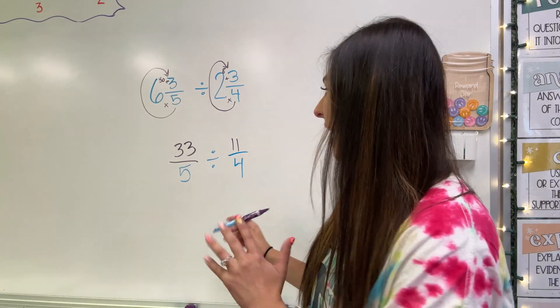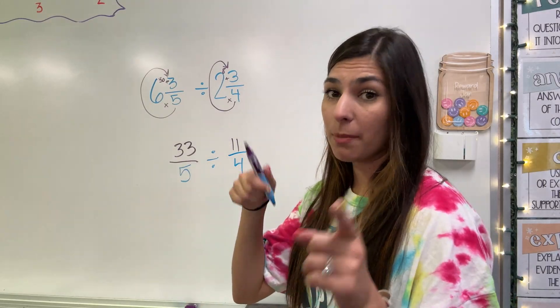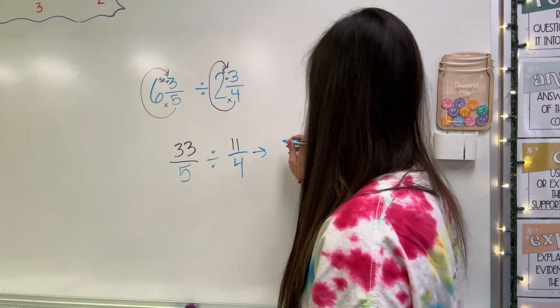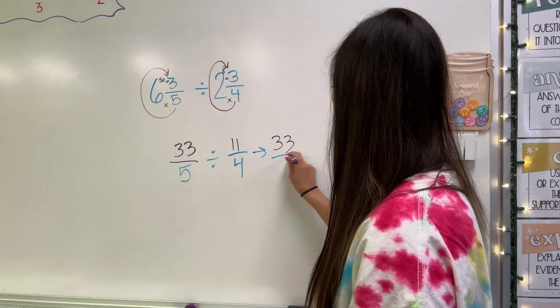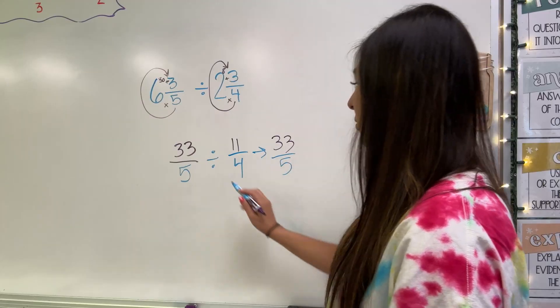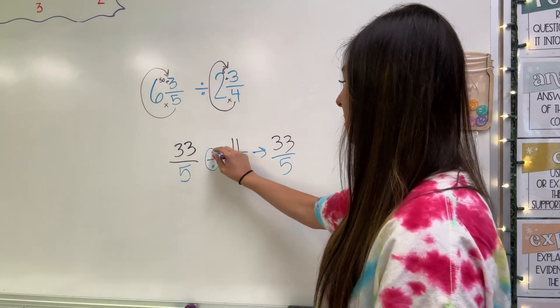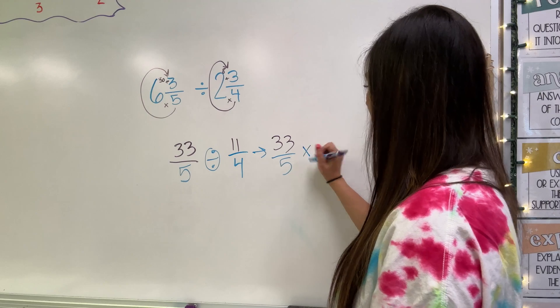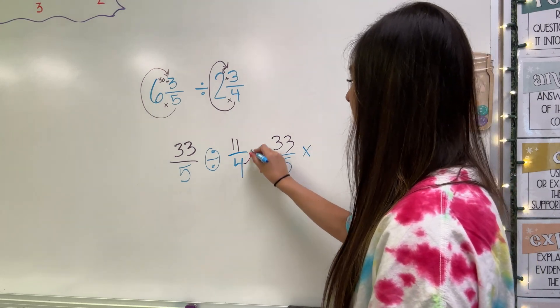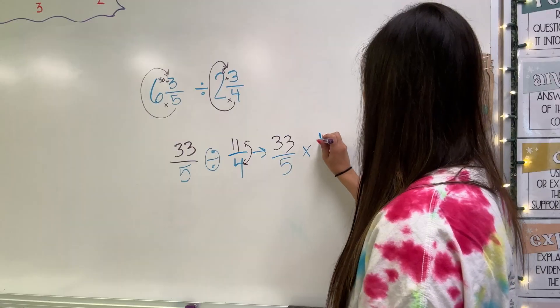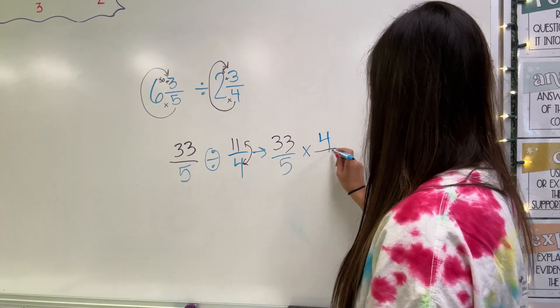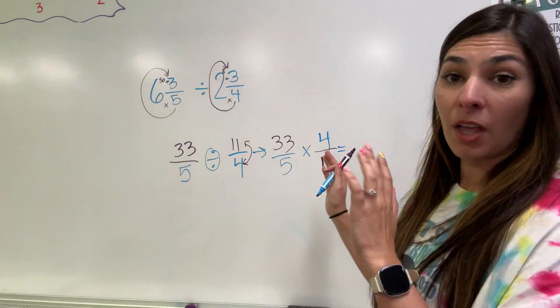From here, I can actually start to divide these problems, except I don't divide because I do keep change flip. I'm going to keep that 33 over five. I'm going to change this division to a multiplication. And then I'm going to flip my 11 over four. So instead it's going to be four over 11.